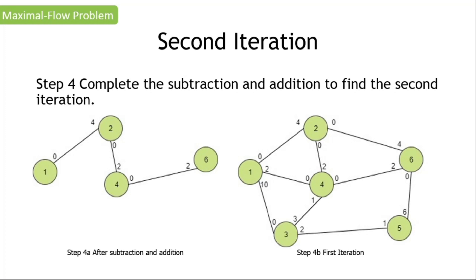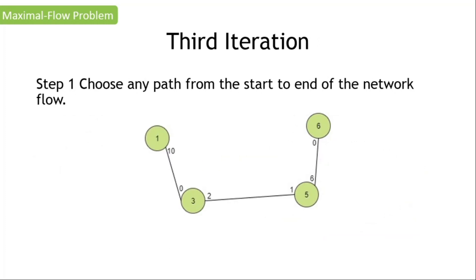Again, ask yourselves: can we find any other path that has no zero flow capacity going from a source node to a sink node? And the answer is again yes. So using the path one to three, three to five, and five to six — that is our step one for the third iteration of our maximal flow problem.